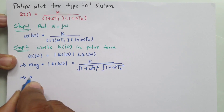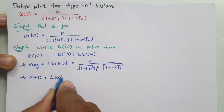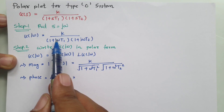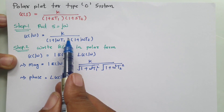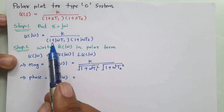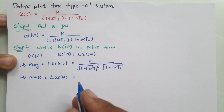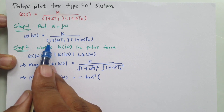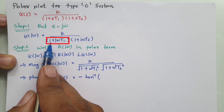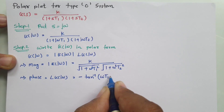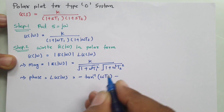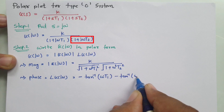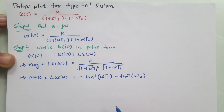To find the phase, which is the angle of G(jω): for poles, the angle is negative, and for zeros, the angle is positive. This system has no zeros, so for both poles the angle is negative. Phase equals minus tan⁻¹(ωT1/1) minus tan⁻¹(ωT2/1). This is our phase expression.